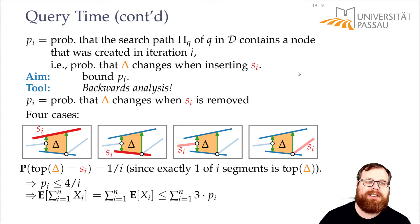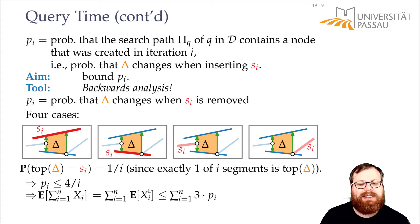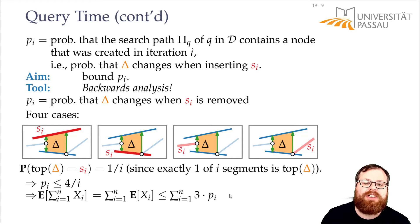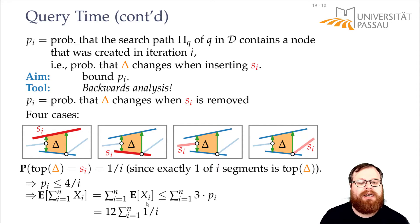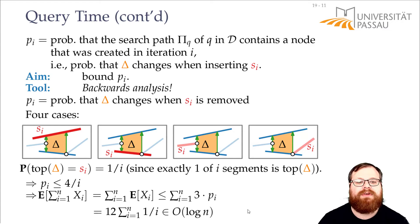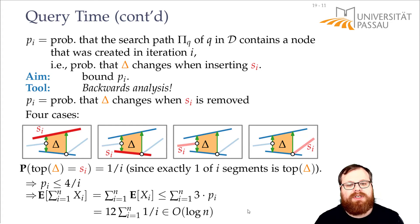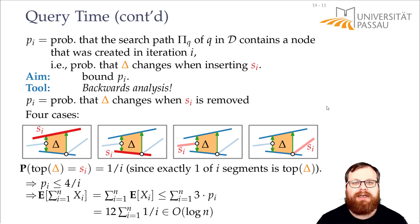Plugging this in: the expected value of xi is at most 3 times the probability that something changes (since it adds at most 3 nodes), which is at most 4/i, giving at most 12/i. Summing over all i gives 12 times the harmonic function, so we have O(log n) query time. This is exactly what we wanted to prove: in expectation the query time is O(log n).